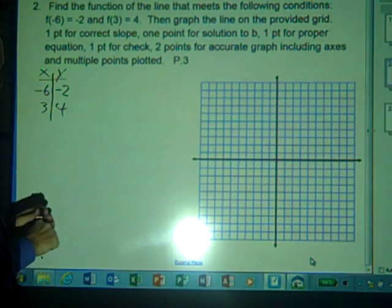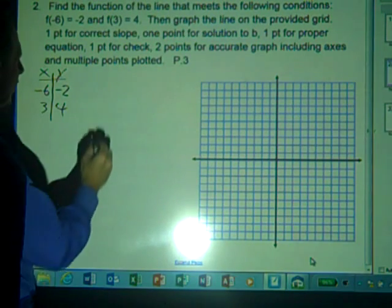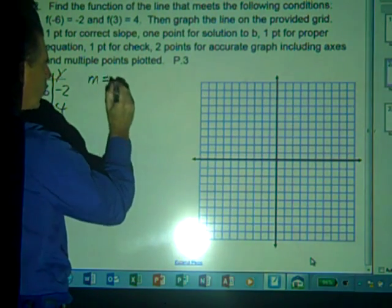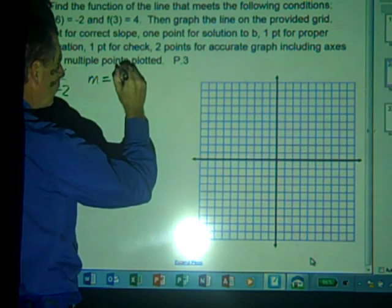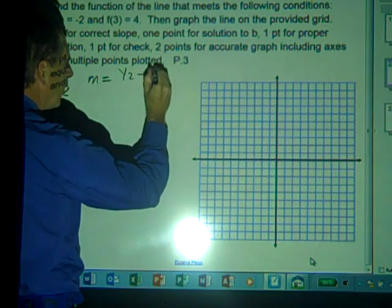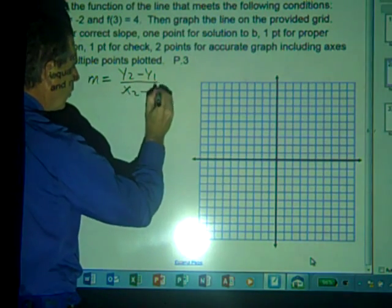Now, first we're going to need to find the slope of a line, and the equation for slope is m equals y2 minus y1 over x2 minus x1.